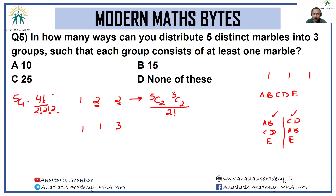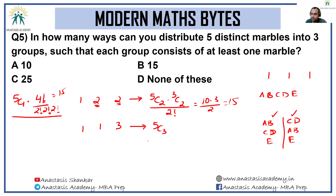Either way you get 15 cases for the 1-2-2 arrangement: 5 × 4!/8 = 15, or 10 × 3/2 = 15. For the 1-1-3 arrangement, simply select which three marbles are paired up — 5C3 = 10. Altogether you get 15 + 10 = 25 cases. The key point is: only when selecting repeated or identical groups do you need to correct for inflated counting. That will be all for this modern maths byte episode — hopefully you learned something!